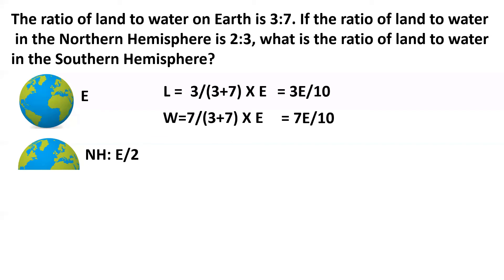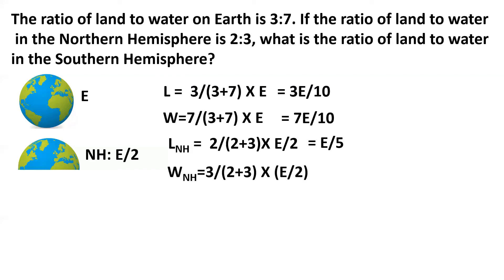So we can write an equation for the amount of land in the northern hemisphere, which would be 2 by (2 plus 3) multiplied by E by 2, and that comes to 2E by 10. Similarly, we can write an equation for the amount of water in the northern hemisphere, which comes to 3 by (2 plus 3) multiplied by E by 2, and that comes to 3E by 10.